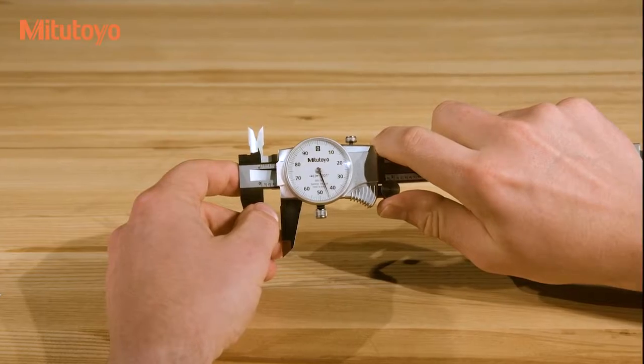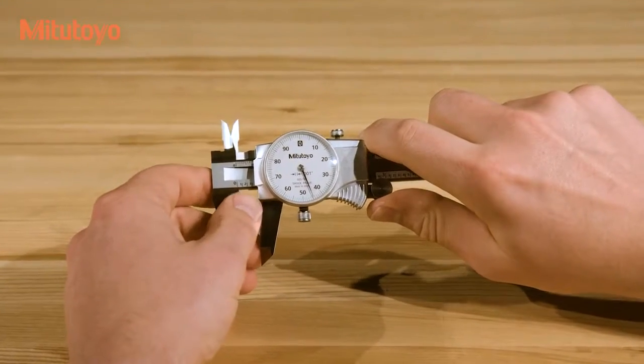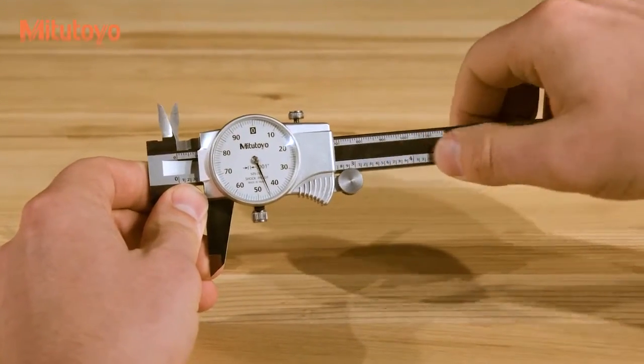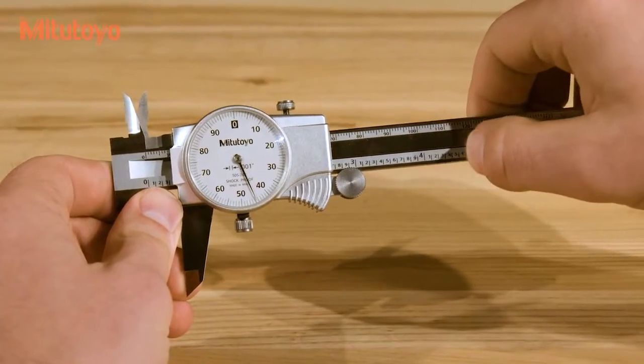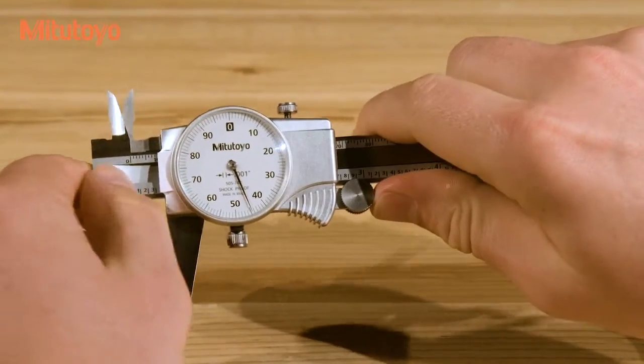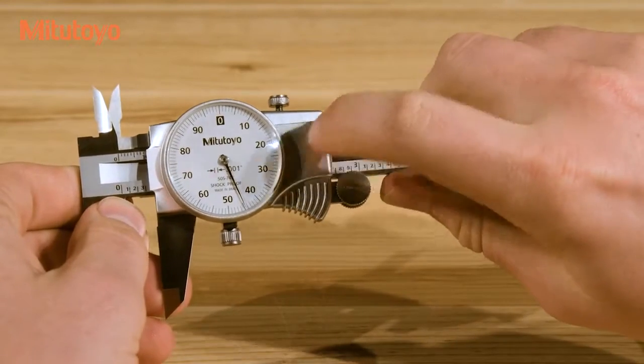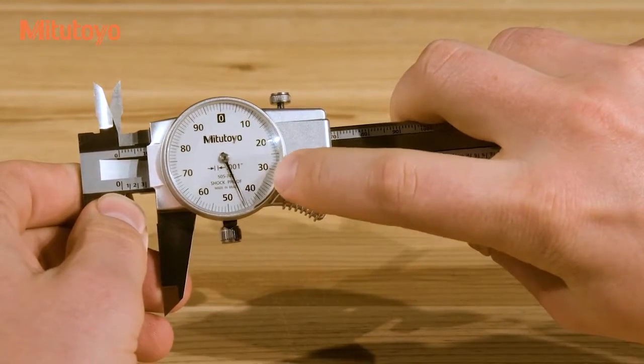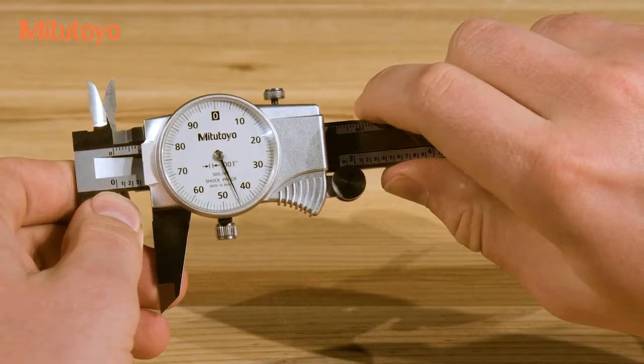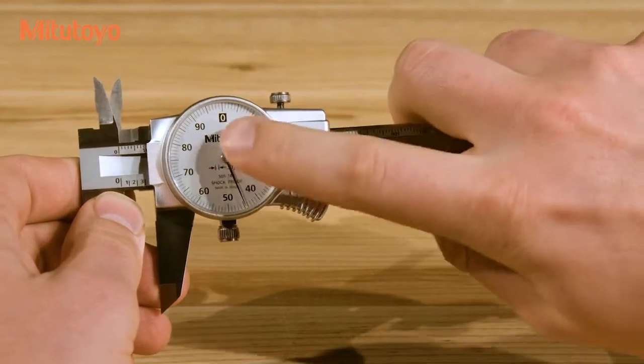There are two sets of graduations on a dial caliper. On an inch caliper like this one, the main scale is marked in 0.1-inch intervals and is read directly by finding the last line passed by the end of the sliding jaw. The dial is marked in 0.001-inch intervals and is read by identifying the graduation indicated by the hand.